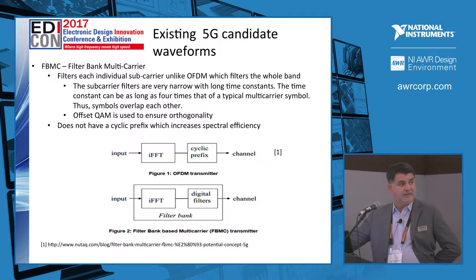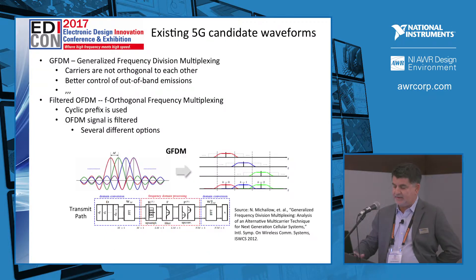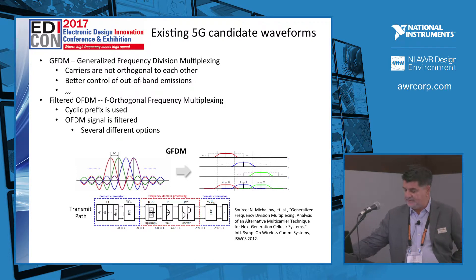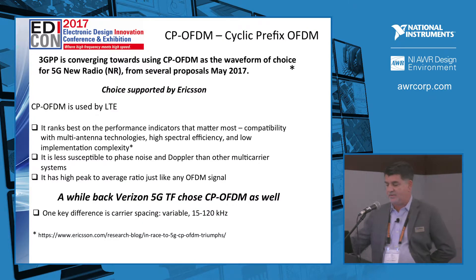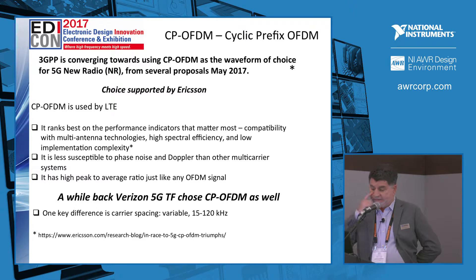One idea was filter bank multi-carrier (FBMC), which entails using offset QAM — that's a candidate waveform that was considered as part of a proposal. Other candidate signals considered were generalized frequency division multiplexing (GFDM) and filtered OFDM. Most recently, the 3GPP organization settled on cyclic prefix OFDM (CP-OFDM), and Ericsson has also supported this position.